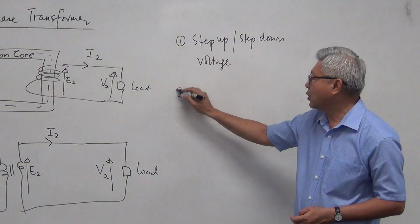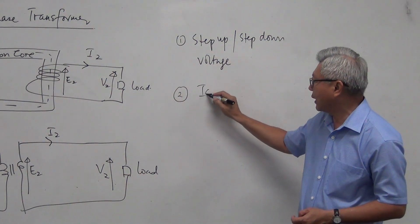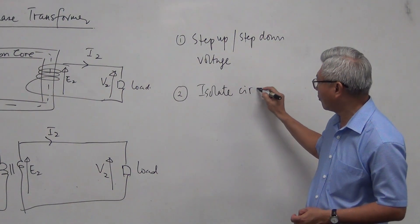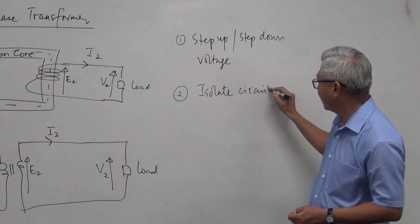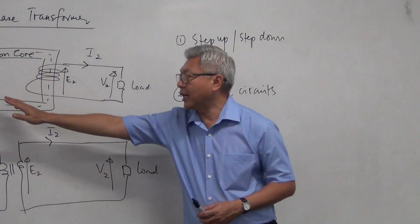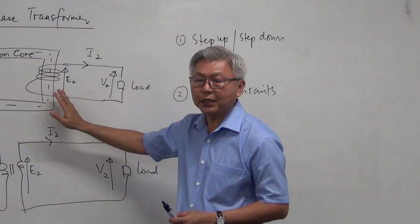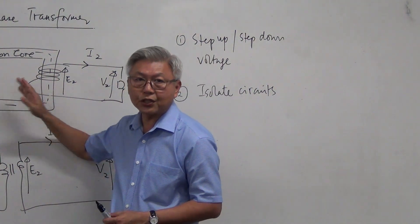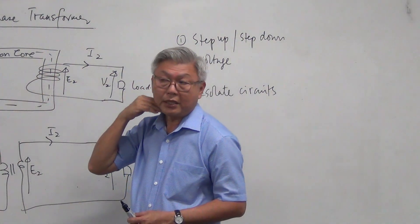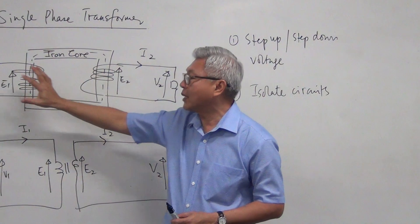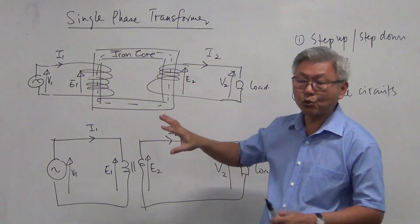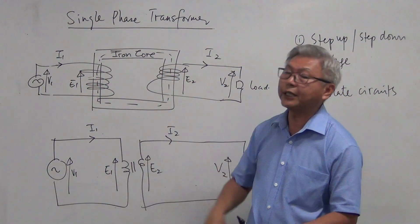The second use of a transformer is to isolate circuits. Our primary circuit and the secondary circuit are physically not touching each other — they are separate circuits. So if I have one circuit here and another circuit there, the transformer can be used to isolate them.